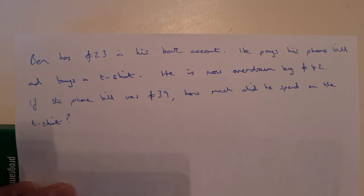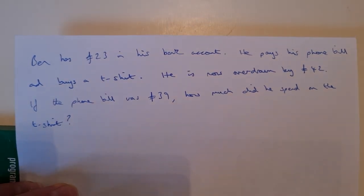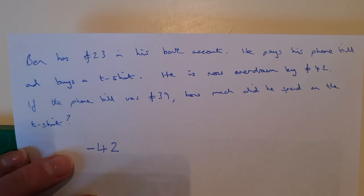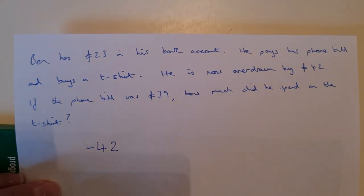This last type of question needs us to think very, very carefully and do this very slowly. Now, we're told that Ben has got £23 in his bank account. He pays his phone bill and he buys a t-shirt. He's now overdrawn by £42, and that means he's spent more money than he's actually got, so he's been using the bank's money. So now he owes the bank money. If the phone bill was £39, how much did he spend on the t-shirt?